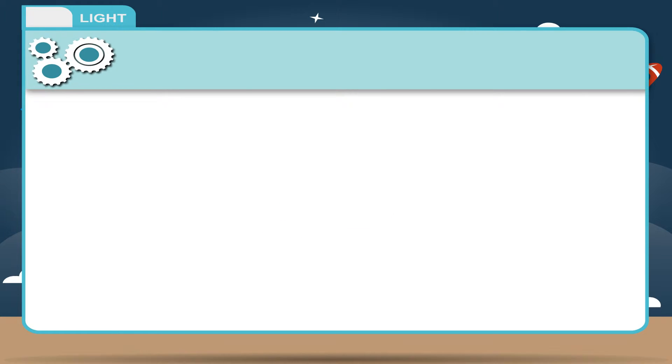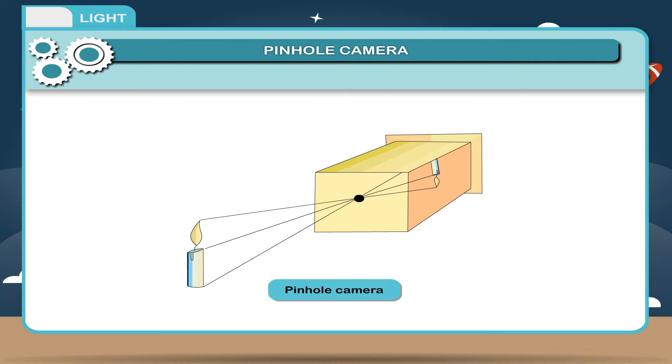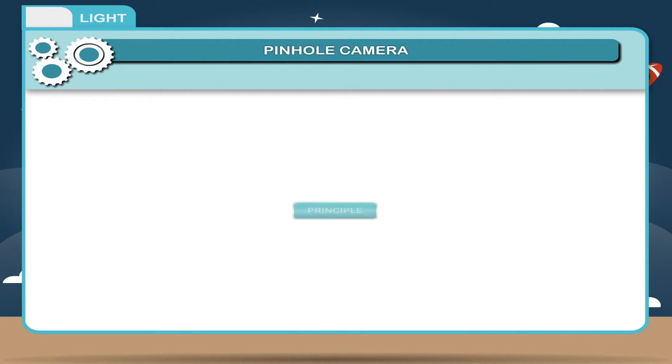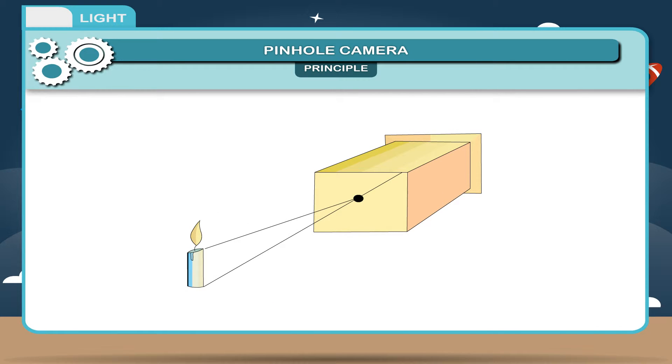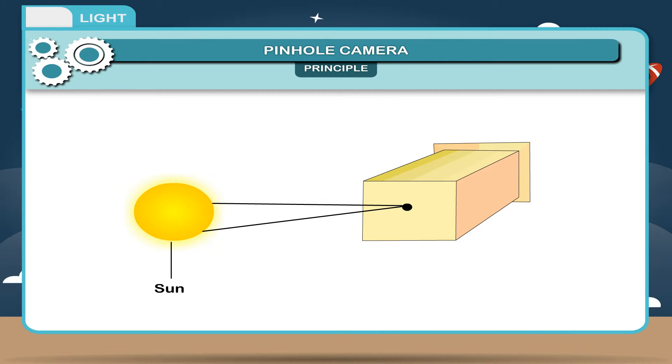Pinhole Camera. A pinhole camera is a simple camera without a lens. A pinhole camera consists of a box with a small hole in a metal plate at one end and a screen of tracing paper at the other end. When the pinhole is pointed at a light source, such as a candle, an image of the candle will appear on the screen. Principle: It is based on the fact that light travels in a straight line. It was first used to view solar eclipse to avoid any damage to the eyes.